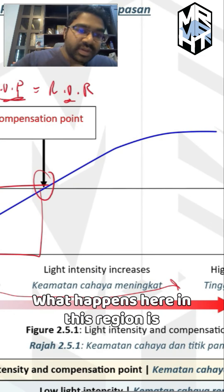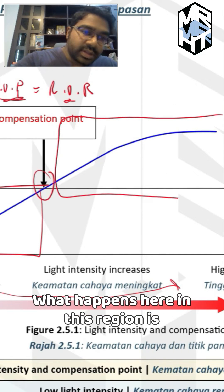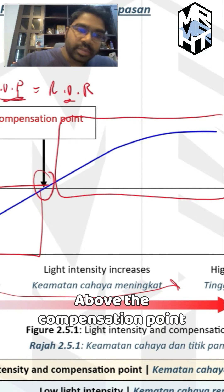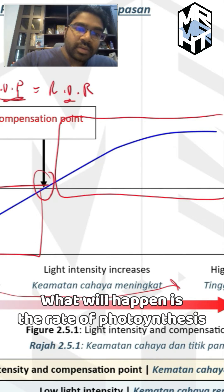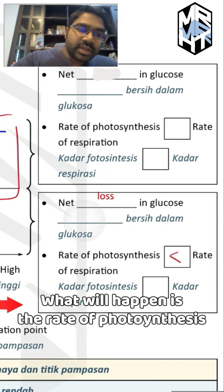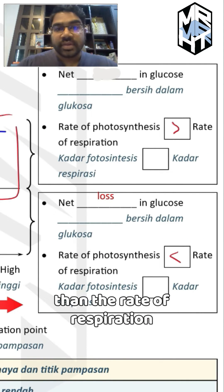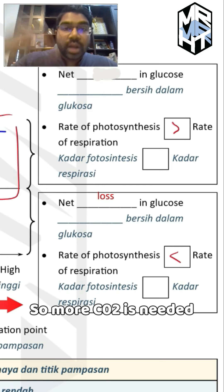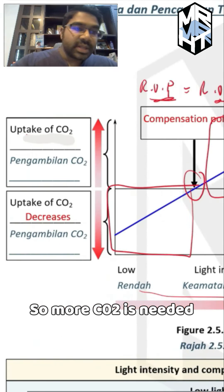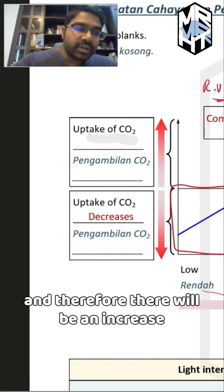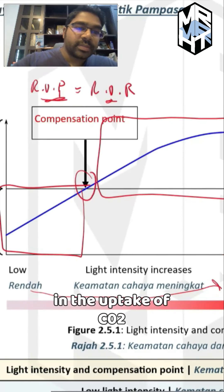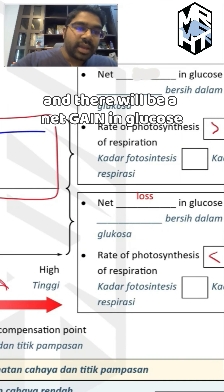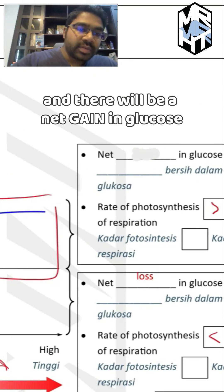In this region above the compensation point, the rate of photosynthesis is greater than the rate of respiration. So more carbon dioxide is needed, and therefore there will be an increase in the uptake of carbon dioxide, and there will be a net gain in glucose.